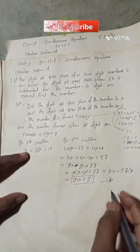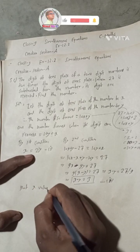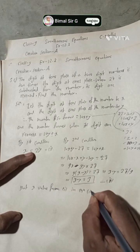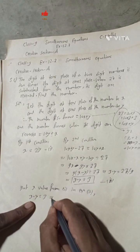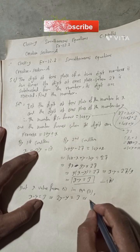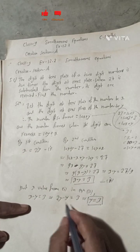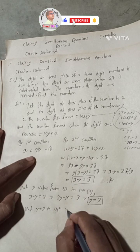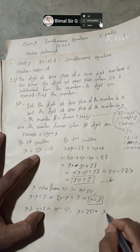Now solve: from equation 1, x = 2y. Putting this into equation 2: 2y − y = 3, which gives y = 3. Now putting y = 3 back into equation 1: x = 2 times 3, so x = 6.